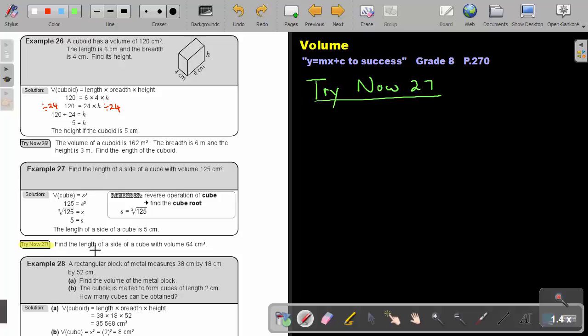Let's start. Find the length of a side of a cube with a volume of this. So again, volume of a cube. What is the volume of a cube? It's just S to the power of 3. So I fill in the volume, 64, and that's S to the power of 3.